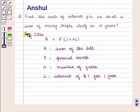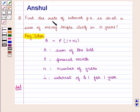With this key idea let us proceed with the solution. We need to find the rate of interest per annum when the sum of money triple itself and the time given is 10 years.